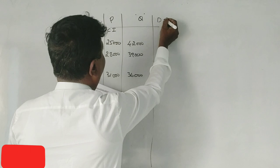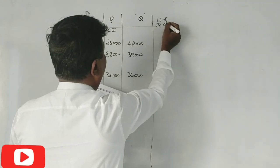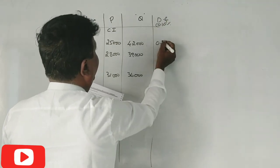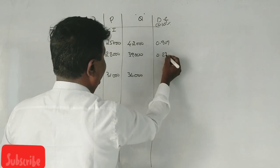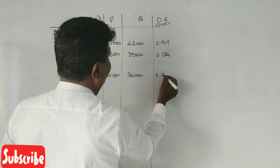Discount factor at 10%: 0.909, 0.826, 0.751.